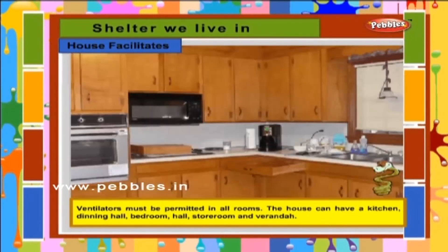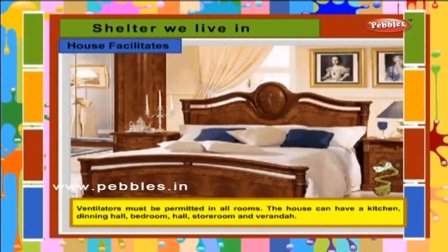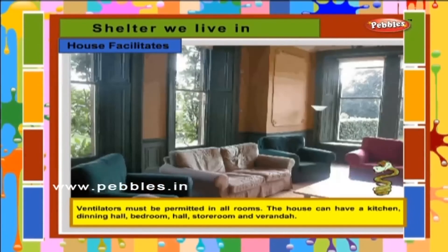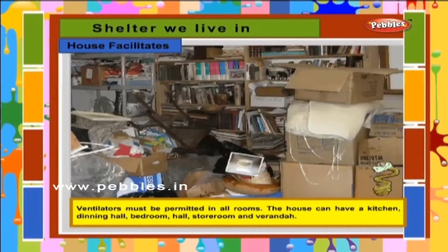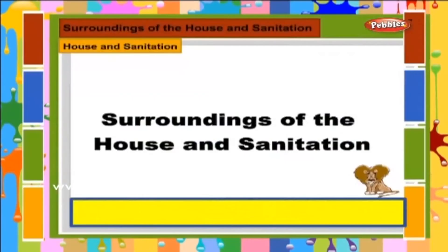Ventilators must be permitted in all rooms. The house can have a kitchen, dining hall, bedroom, hall, storeroom and veranda.